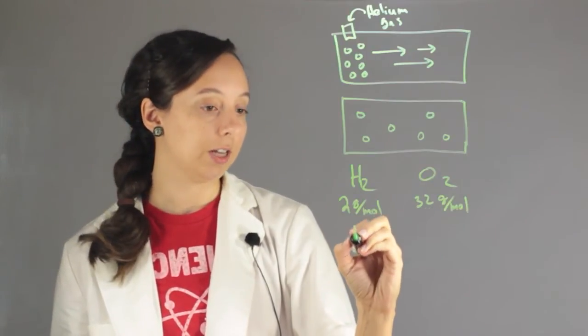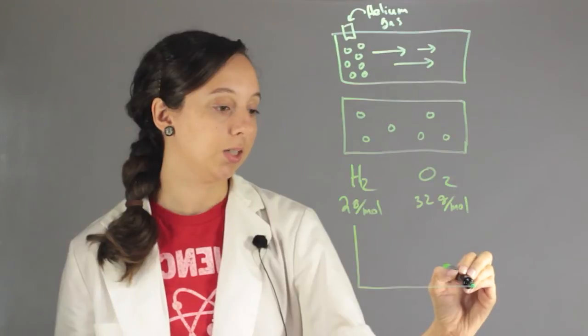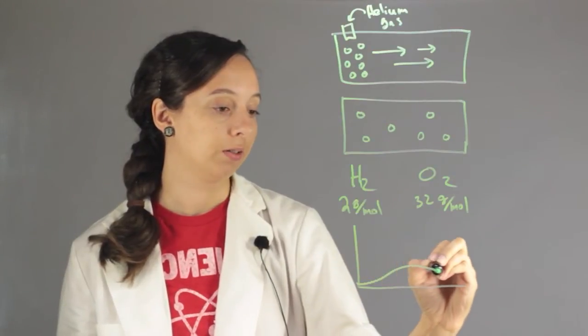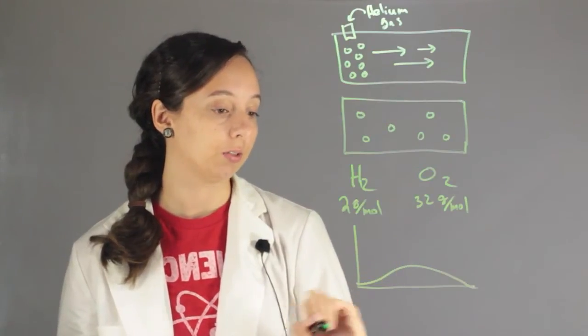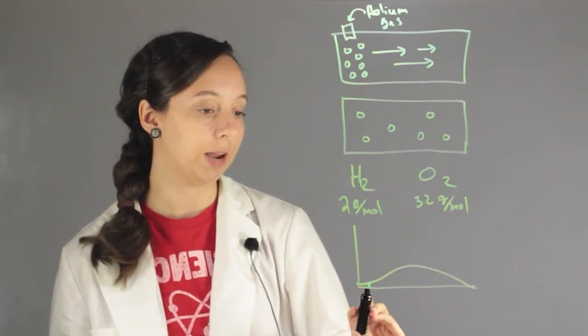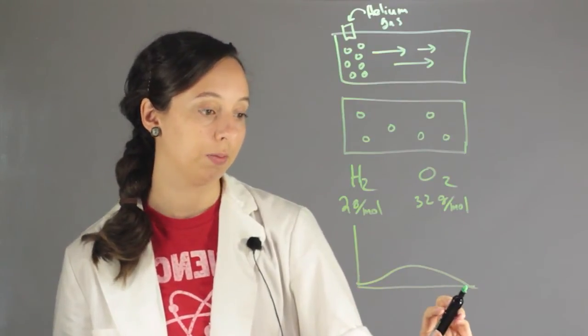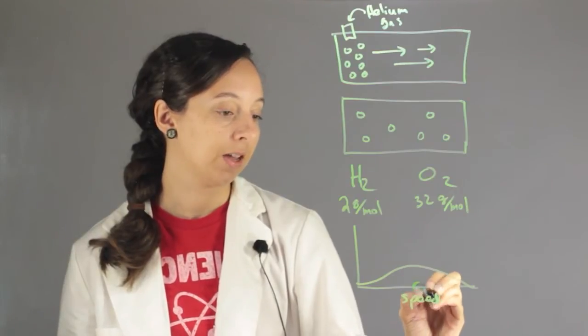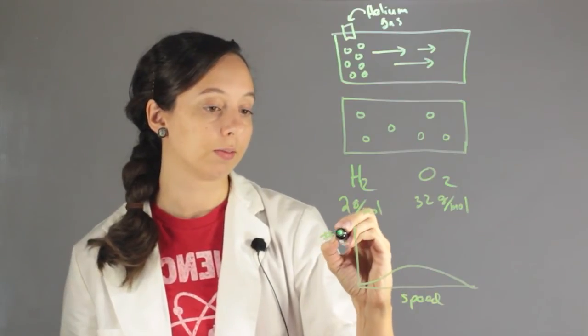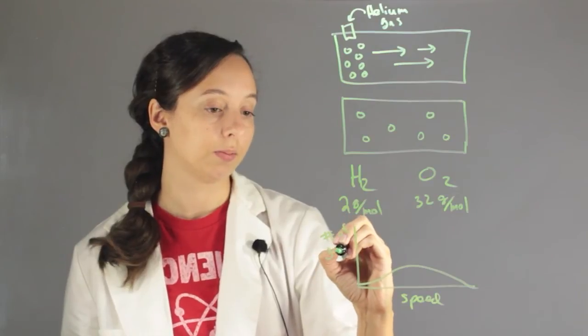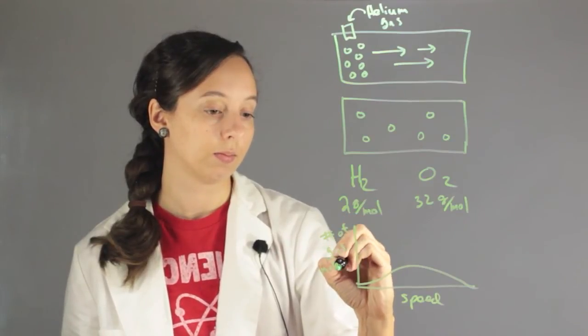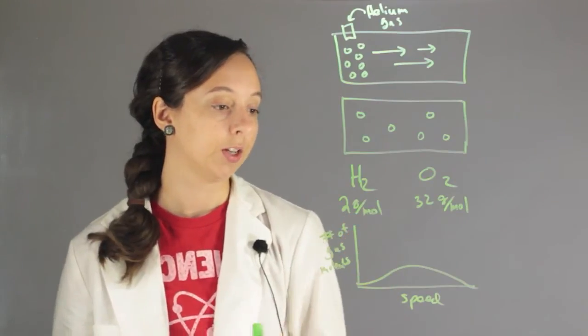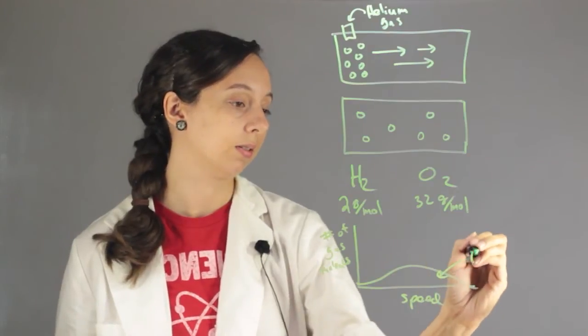Now if you take a look at their relative speeds, we have hydrogen, it's going to look like this, where you have lots of different types of speeds, and some of them are going pretty fast. So this is speed, and this is number of gas molecules. So this is H2.